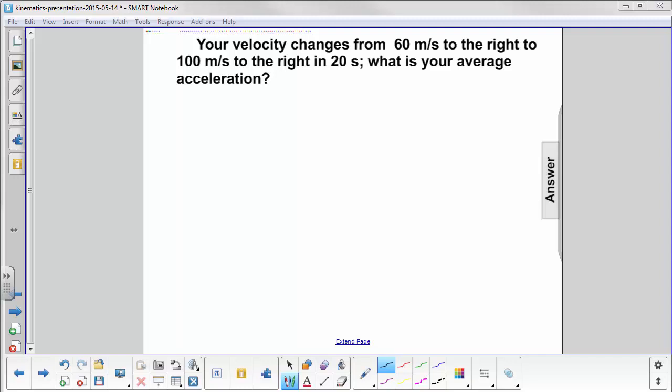Your velocity changes from 60 meters per second to the right to 100 meters per second to the right in 20 seconds. What is your average acceleration?